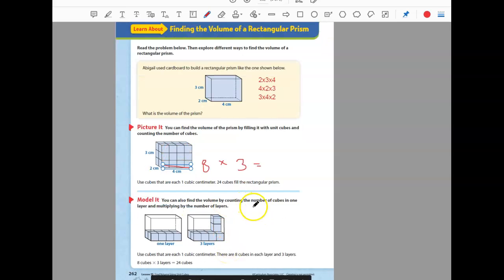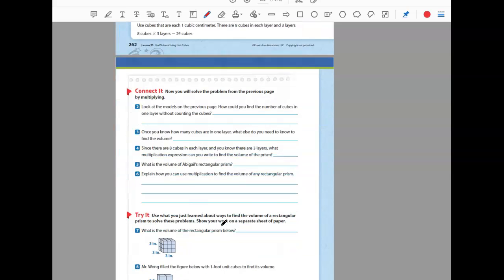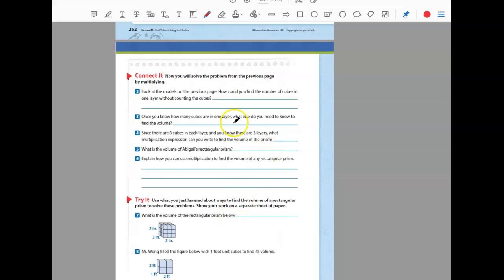You can also find the volume by counting the number of cubes in one layer and multiplying it. You can fill the prism with unit cubes and count all the cubes. Or we can find the amount of cubes in one layer, and then multiply by how many layers high it is. So that's another way of doing it. Now let's connect this and answer some questions.